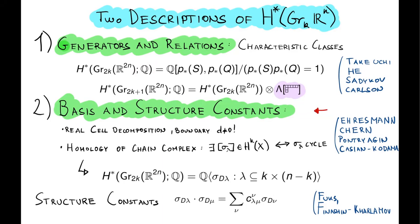In the case when both the dimension of the subspace and the ambient space are even, we have a similar situation. Namely, the cohomology is generated by characteristic classes. These characteristic classes are Pontryagin classes, since these are real vector bundles. These generate the cohomology, and the relation is given by the Whitney sum formula.